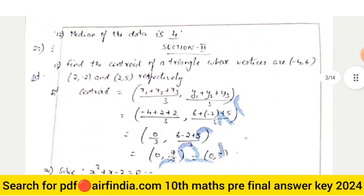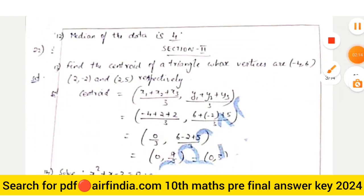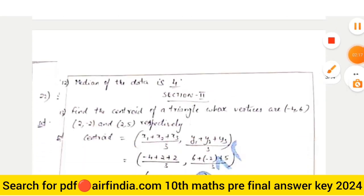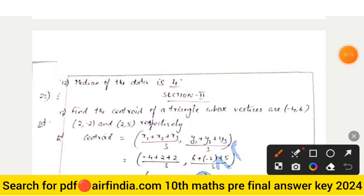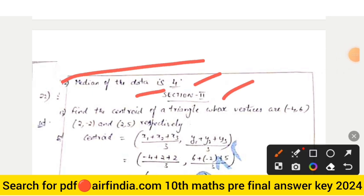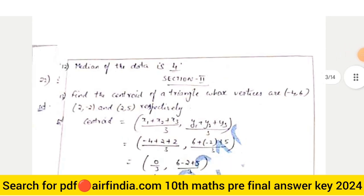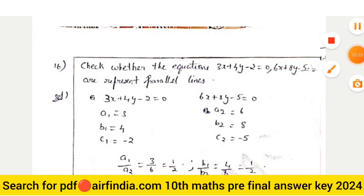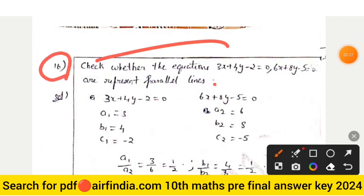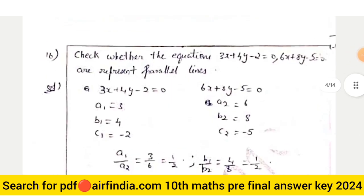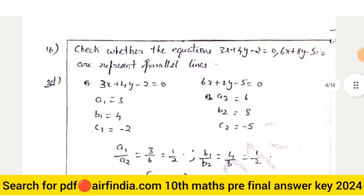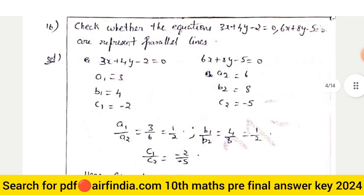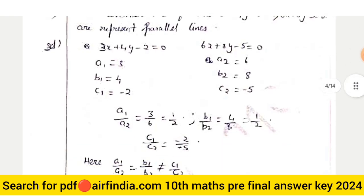Question number twelve: the median of the data is 4. Now section second — question number sixteen: check whether the equations 3x + 4y − 2 = 0 and 6x + 8y − 5 = 0 represent parallel lines.